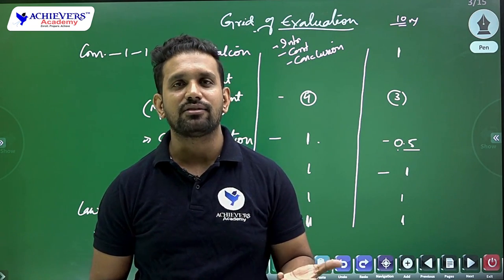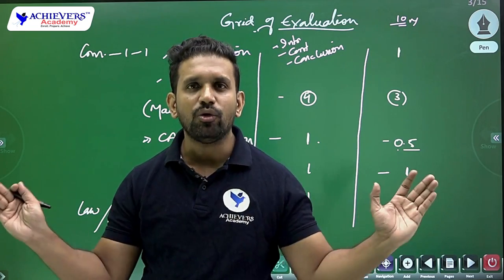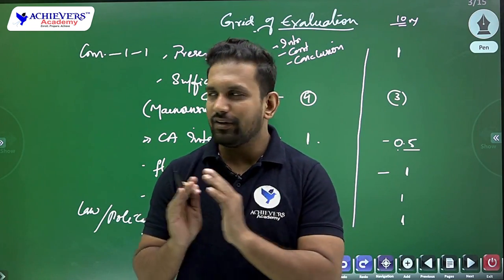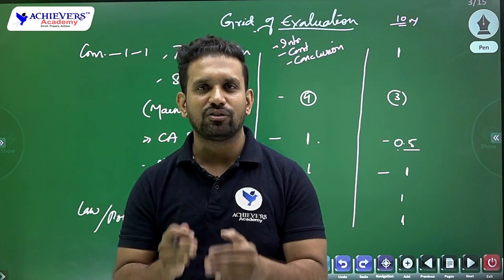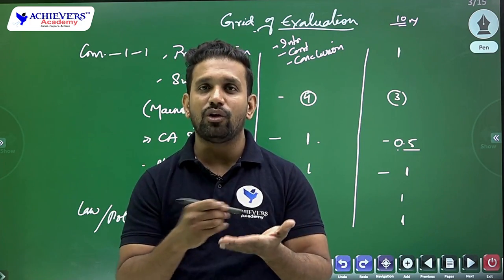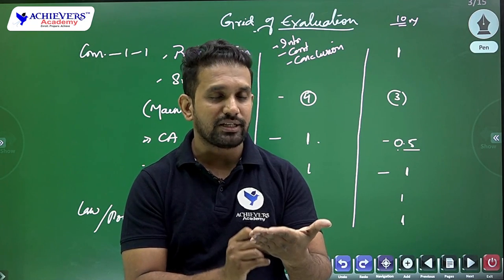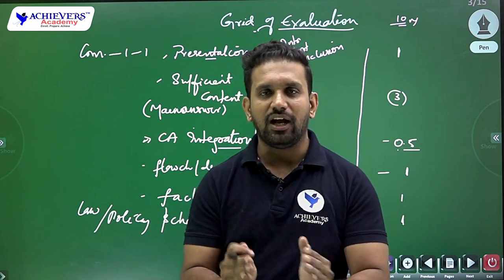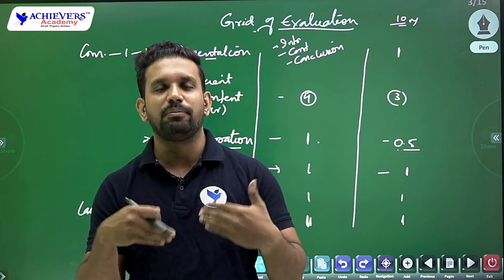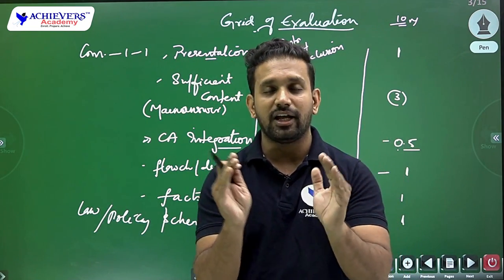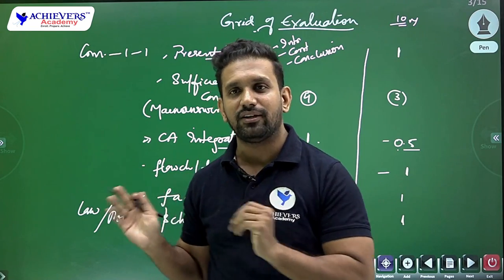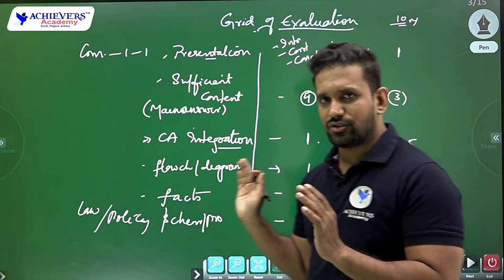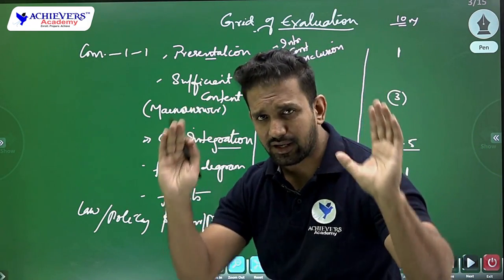Without this grid, one examiner might like your answer and give you eight, and another might not like a very good answer and give six. To remove this disparity — to remove the mood swings of the examiner — the grid of evaluation is used. The examiner checks: has the candidate written the presentation? Yes — one mark. Has the candidate written sufficient content? Yes — four marks. Like that it continues. This is how the examiner's behavior at the time of correcting the paper should be — very very focused.